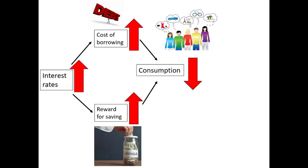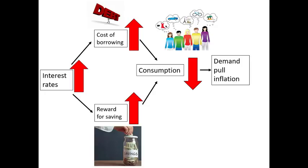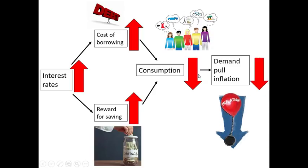Remember the Bank of England was trying to get prices back down from five percent to two percent inflation. If we reduce consumption, we reduce demand, and therefore we reduce demand-pull inflation. That's the basic model of how interest rates — monetary policy — are used to affect the economy.